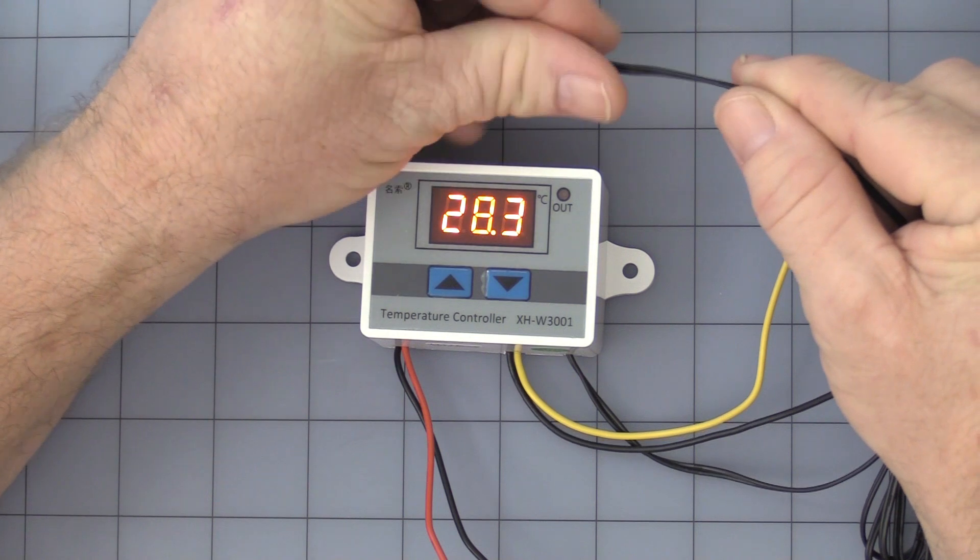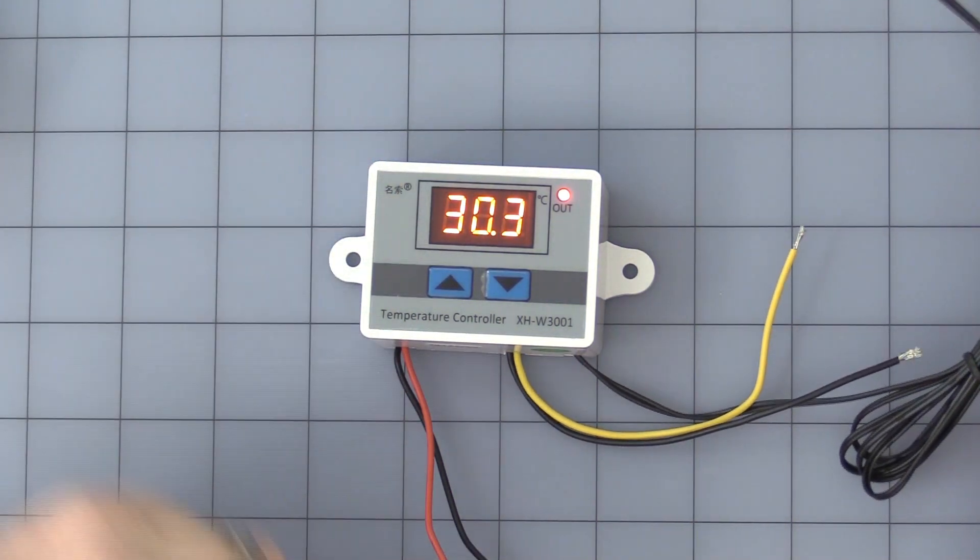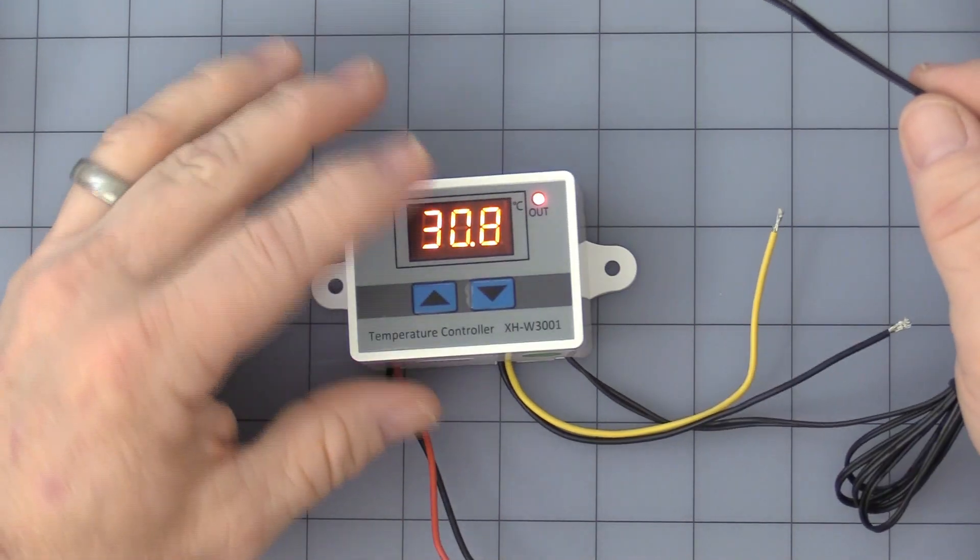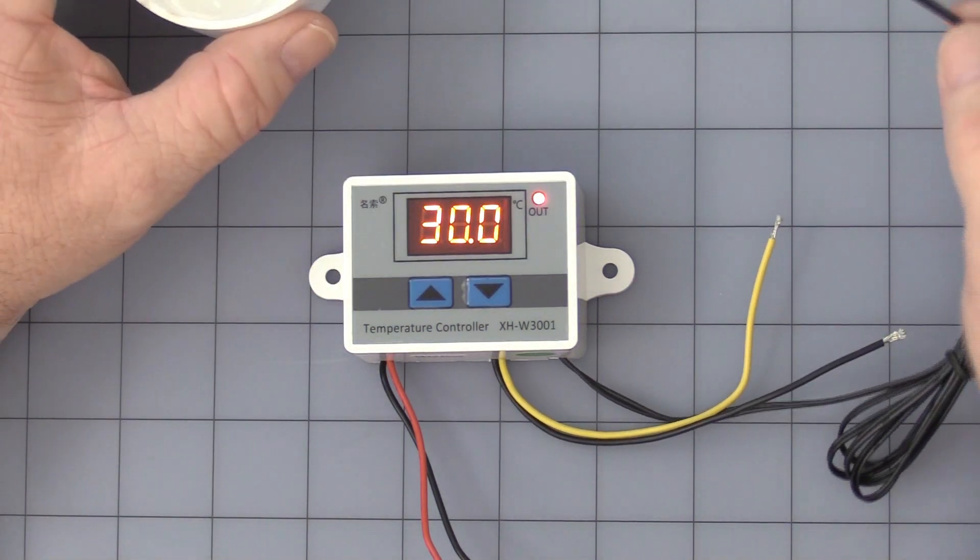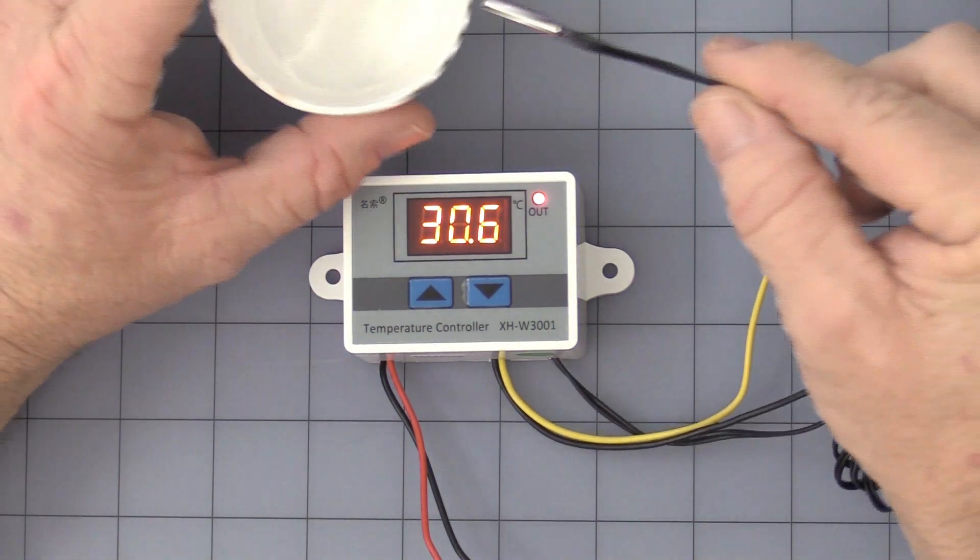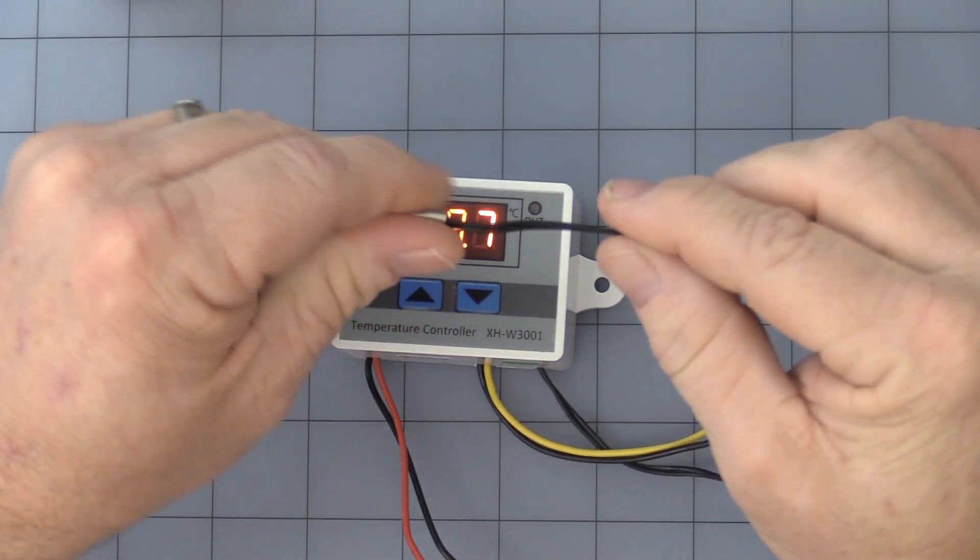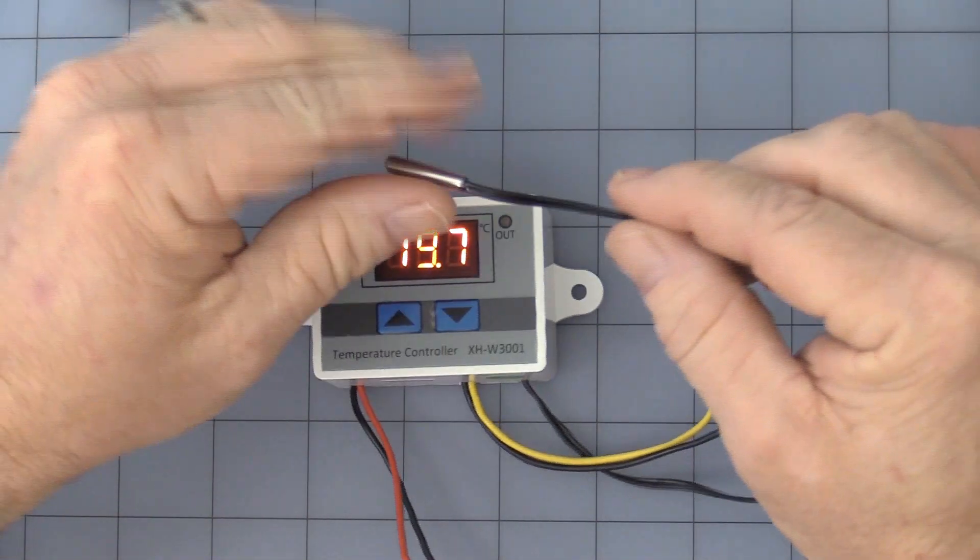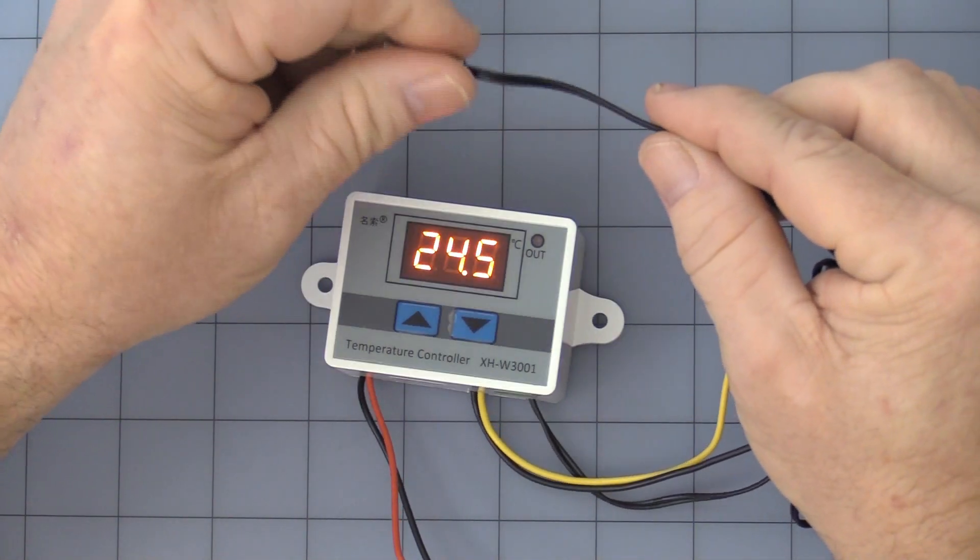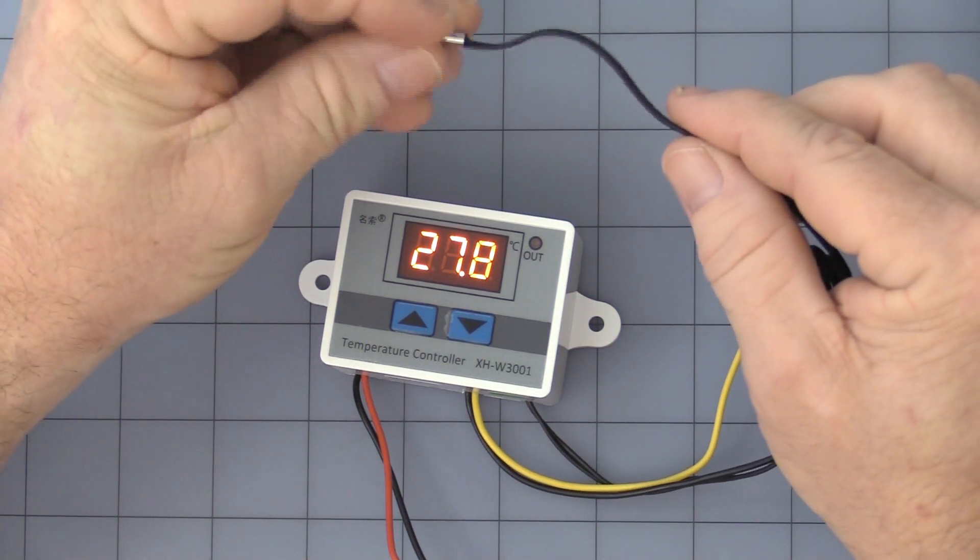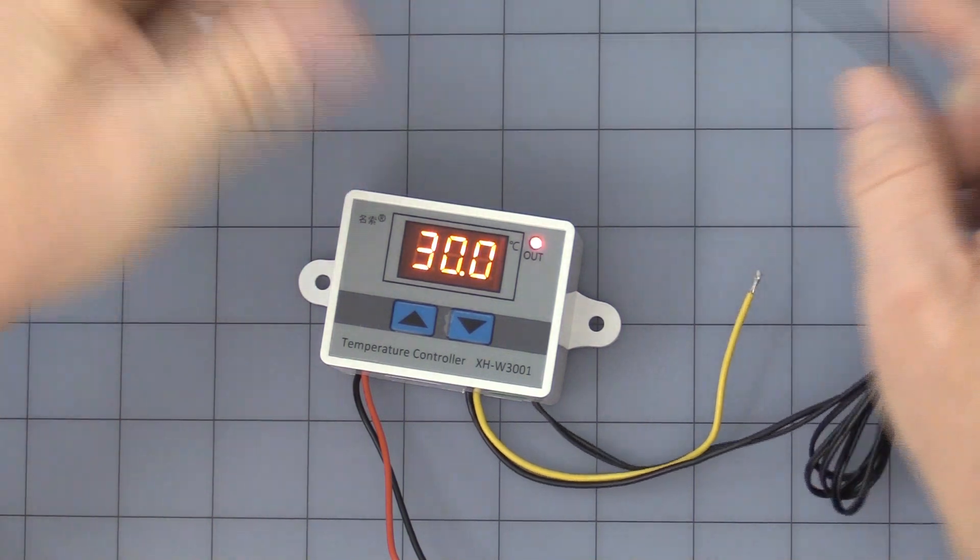Relay turns on and the relay will stay on until we get down to what is it? 24. We'll have that set at 24. Okay. There it turns off. So it's cooled off enough. Once again, once it goes back up to the 30 degree C setting and it turns back on.